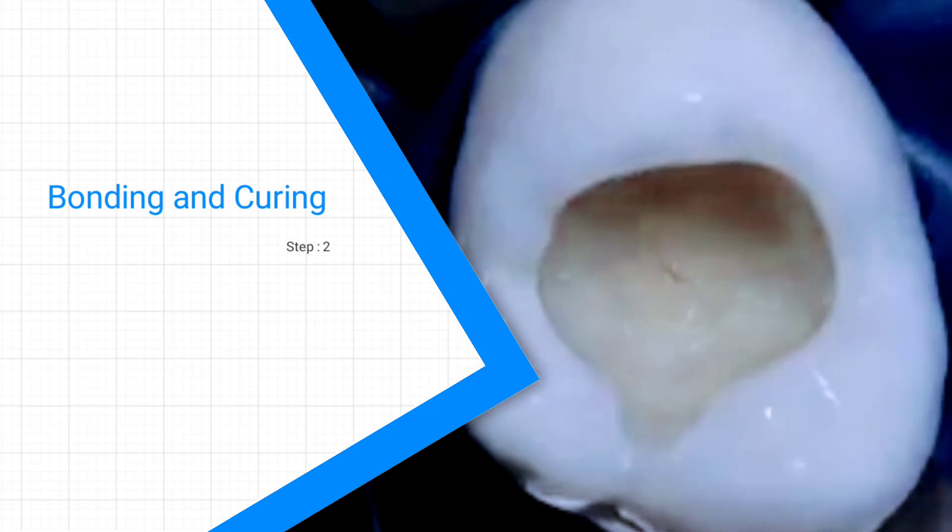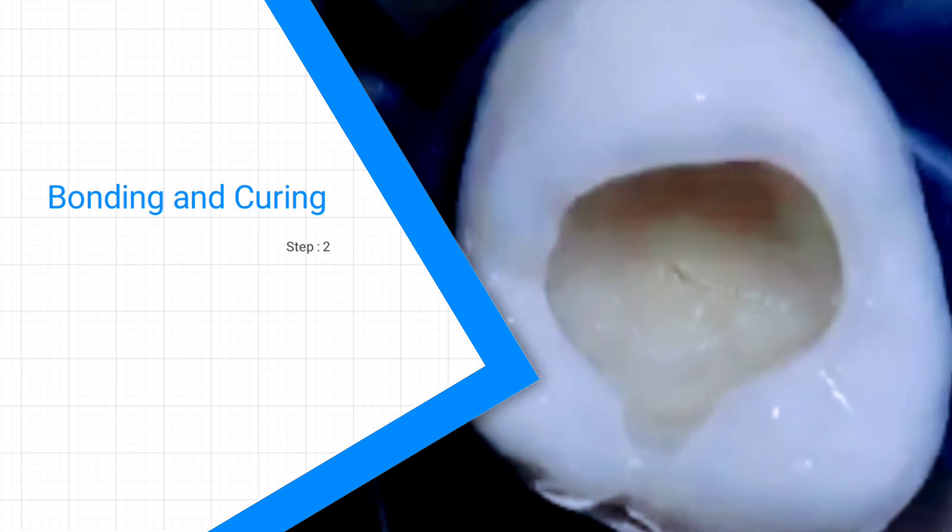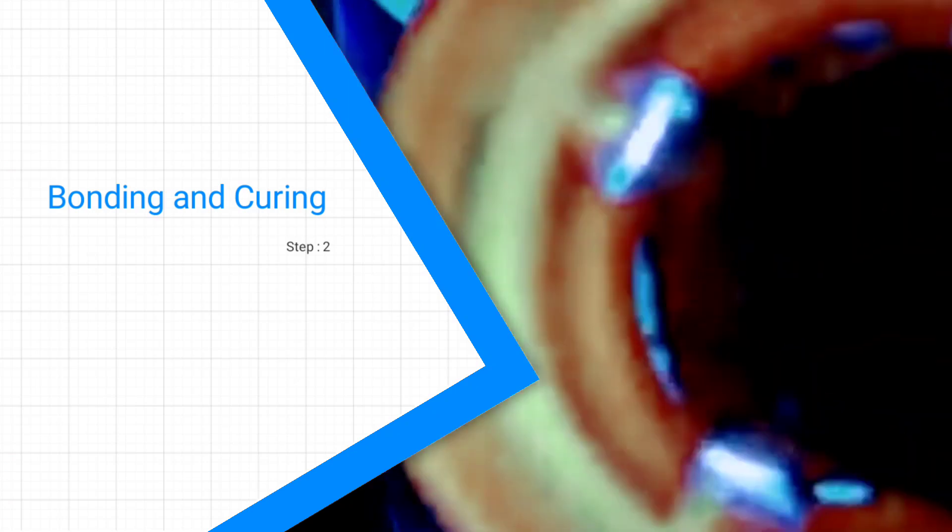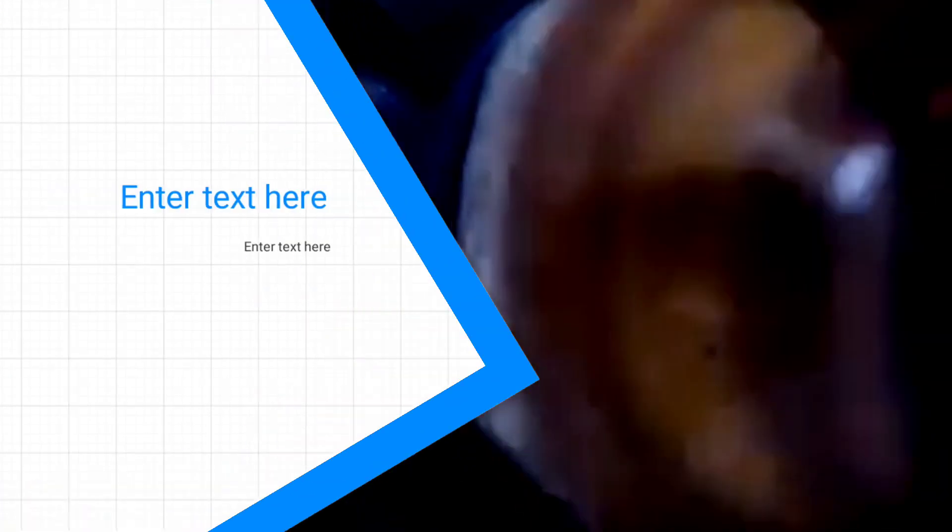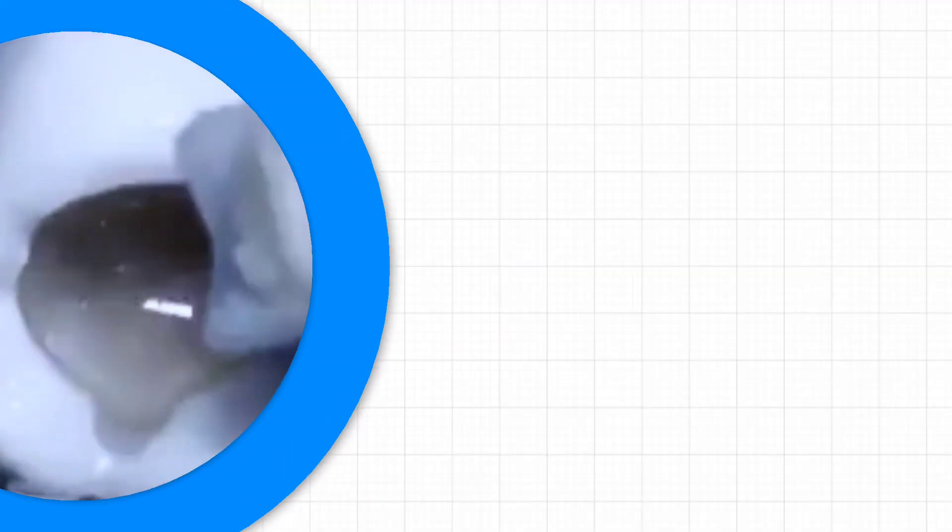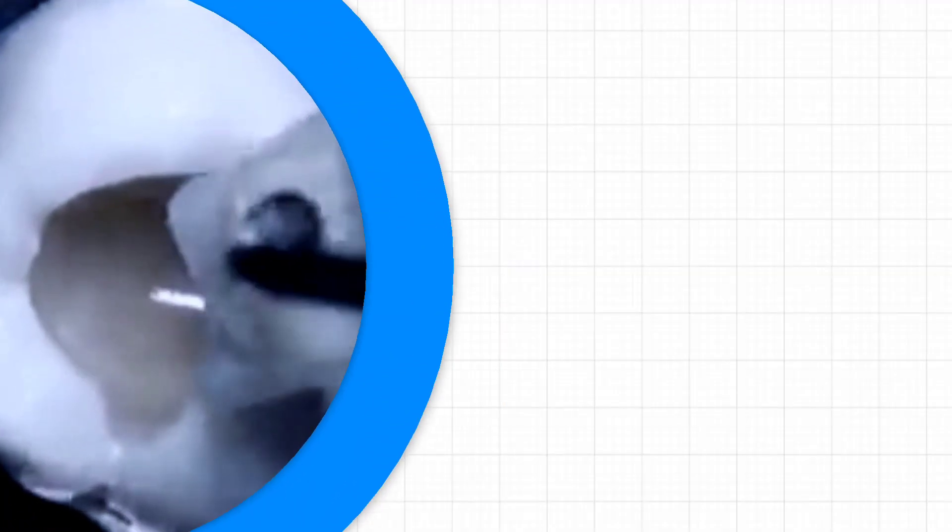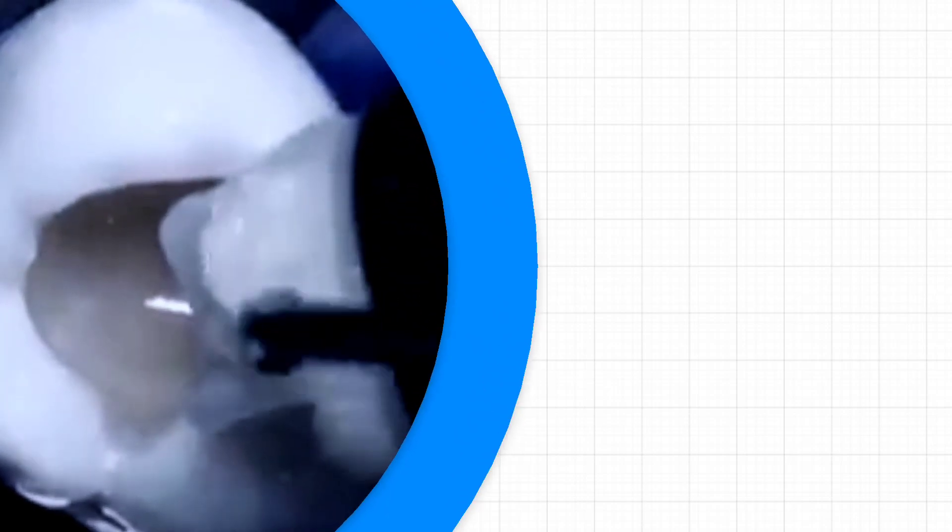Once the bonding agent is even on the dental surface, you can expose it to the curing light for about 15 to 20 seconds. This light triggers the catalyst in the bonding agent and causes it to harden, establishing a micromechanical bond with the etched surface.